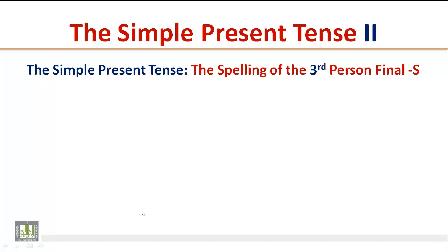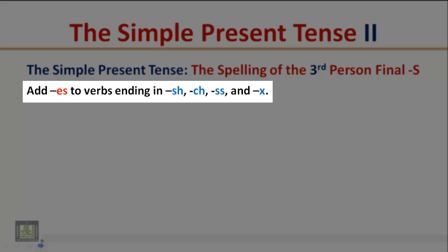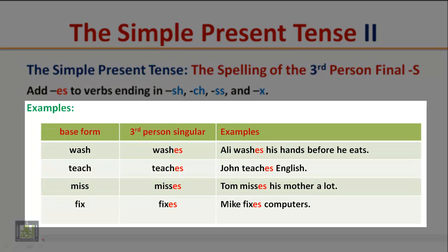Simple Present Tense: The Spelling of the Third Person Singular Final -S. Add -es to verbs ending in sh, ch, ss, and x. Examples: Wash becomes washes. Ali washes his hands before he eats. Teach becomes teaches. John teaches English. Miss becomes misses. Tom misses his mother a lot.